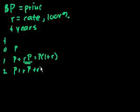That's what we owed in year 1, and then another rP. So that equals P times 1 plus 2r. Just take the P out, and you get 1 plus r plus r, so 1 plus 2r.